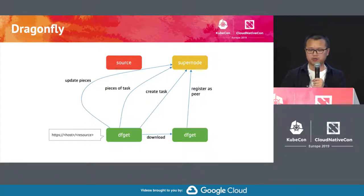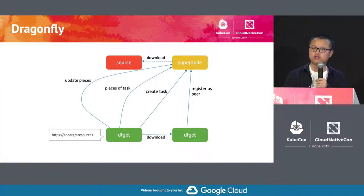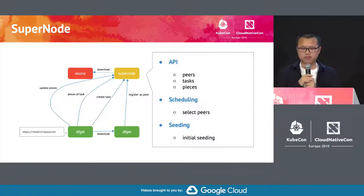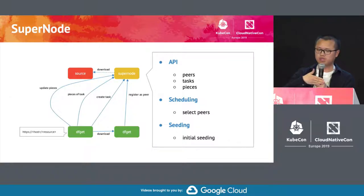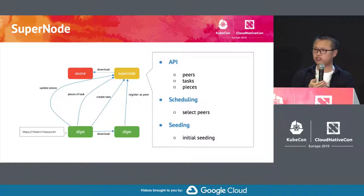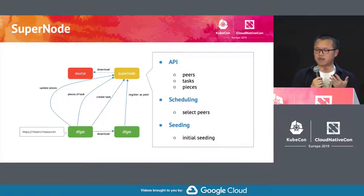In addition, in a case where the cluster is fresh and no one has the file, the super node can act as the first step — it downloads from the source and serves as the first peer. So I'm going to talk about each of the components in more detail. First, let's look at the super node. As we just talked, the super node is essentially a bunch of APIs. It takes peer registration, takes task creation, and also gives you piece information and updates the pieces on each of the nodes.